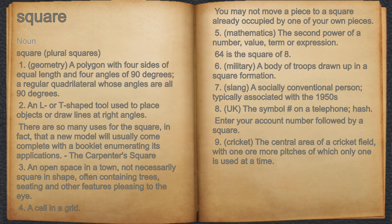Square. Noun. 1. Geometry, a polygon with four sides of equal length and four angles of 90 degrees, a regular quadrilateral whose angles are all 90 degrees.